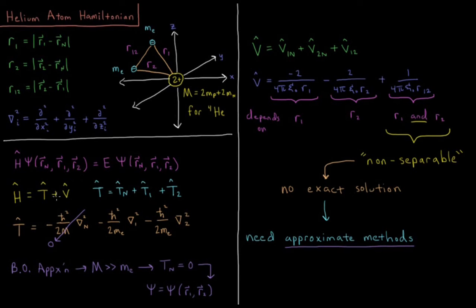Now our potential energy operator is going to be the Coulomb potential acting between all pairs of charged particles. So the potential that electron 1 feels due to the nucleus, potential that electron 2 feels due to the nucleus, and the potential that the electrons feel due to each other. The Coulomb potential is charge 1 times charge 2 divided by 4 pi epsilon 0 distance.